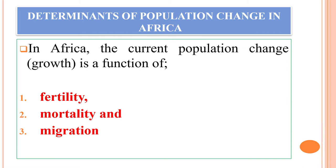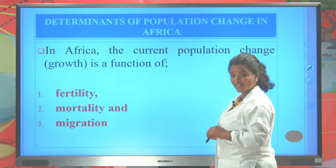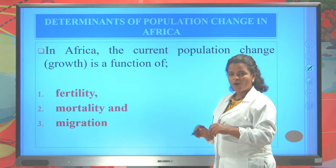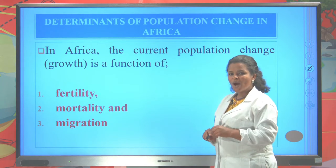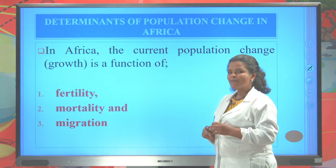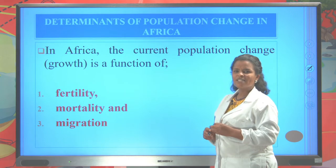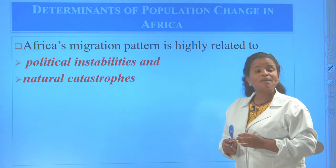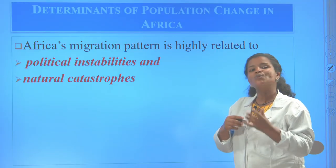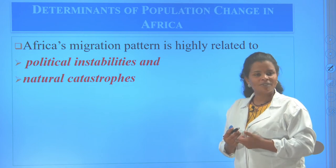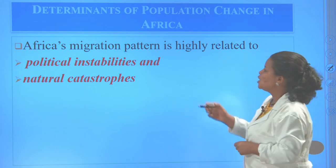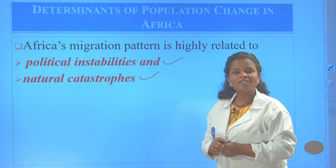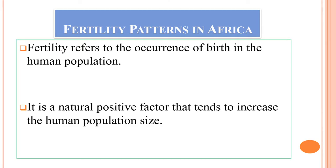The current population change in Africa is the result of three components: fertility, mortality, and migration. Students, based on the previous session — what is fertility, what is mortality, and why do people of Africa migrate? Africa's people migrate from one place to another because of different reasons, but the main reasons are political instability and natural catastrophes.